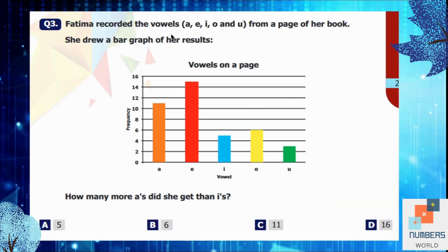Question number 3: Fatima recorded the vowels A, E, I, O, and U from a page of her book. She drew a bar graph of her results. So you can see a bar graph over here. How many more A's did she get than I's? So the bar of A is ending between 10 and 12, so the number is 11. For E, the bar is ending between 14 and 16, so the number is 15. For I, the number is 5. O, the bar is ending at 6. And U is 3.